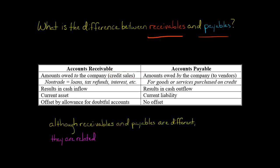But a company could also have non-trade receivables. For example, they might have made loans to their executive officers, they might be expecting a tax refund from the government, or they might have interest receivable. The common denominator is that these are amounts owed to the company.